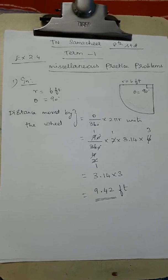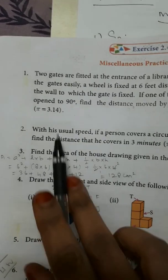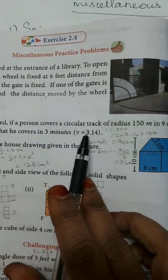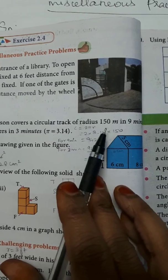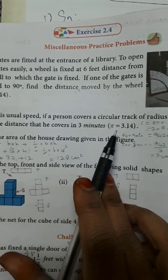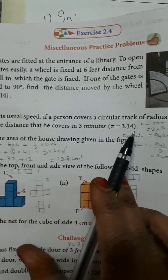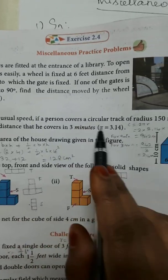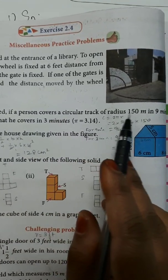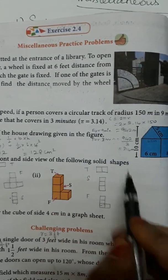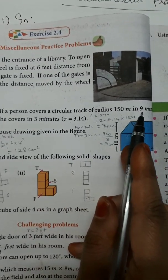Now the second problem: With his usual speed, if a person covers a circular track of radius 150 meters in 9 minutes, find the distance he covers in 3 minutes. Pi value equals 3.14.